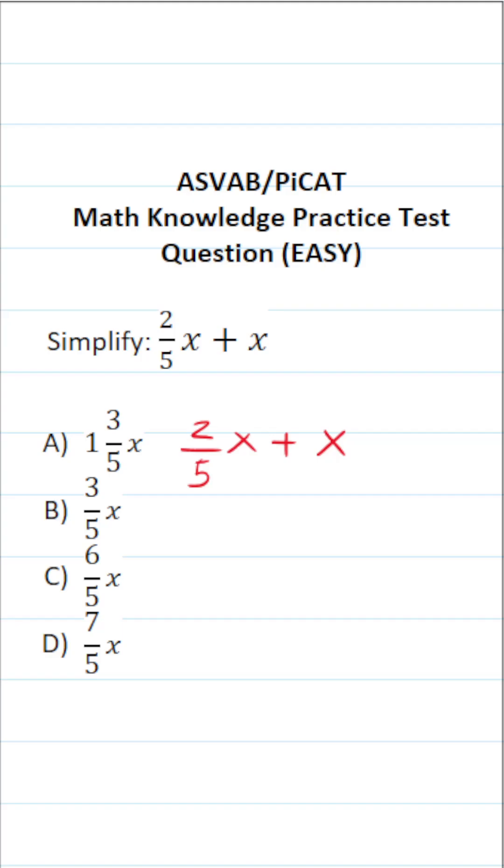First, you have to be able to identify two-fifths x and x as like terms, meaning that you can go ahead and add them. And then second, you have to be able to add fractions in order to solve this one. Again, if it's helpful, we can place a one placeholder in front of this x.